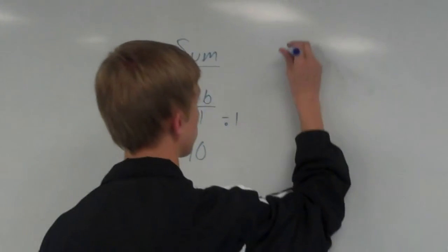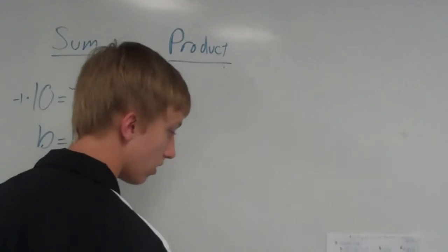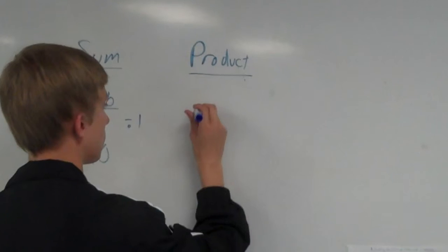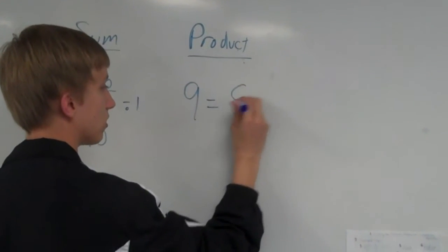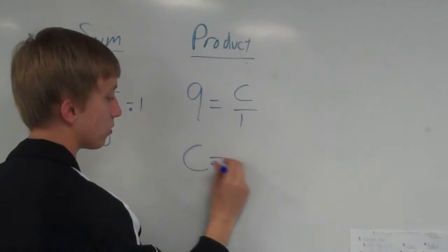Now, I can get the product as well. So, for this specific one, it's 9 equals c over 1, which just can be reduced down to c equals 9.